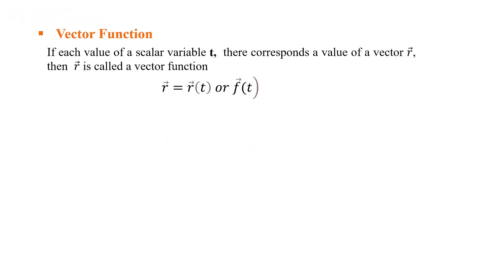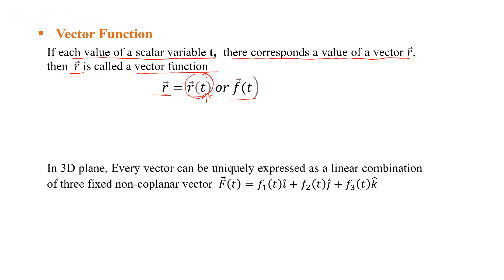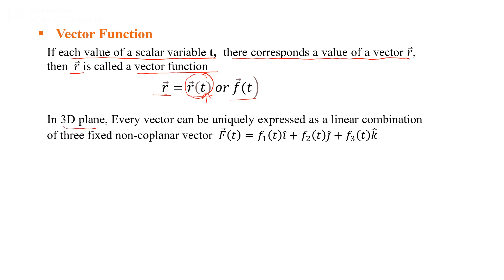A vector function is defined such that if for each value of a scalar variable t there corresponds a value of the vector r, then r is called a vector function. We write r as a function of t, where t is a scalar quantity. In a three-dimensional plane, every vector can be uniquely expressed as a linear combination of three fixed non-coplanar vectors.